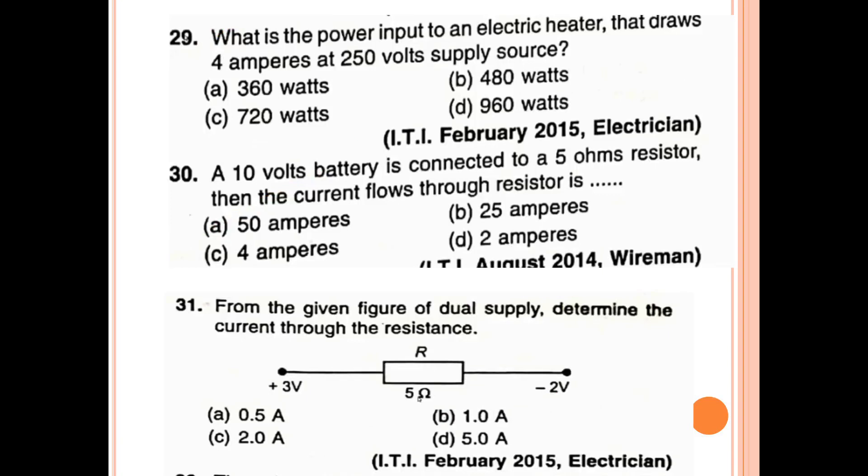What is the power input to an electric heater that draws 4 ampere at a 250 volt supply source? The answer is 1000 watt.